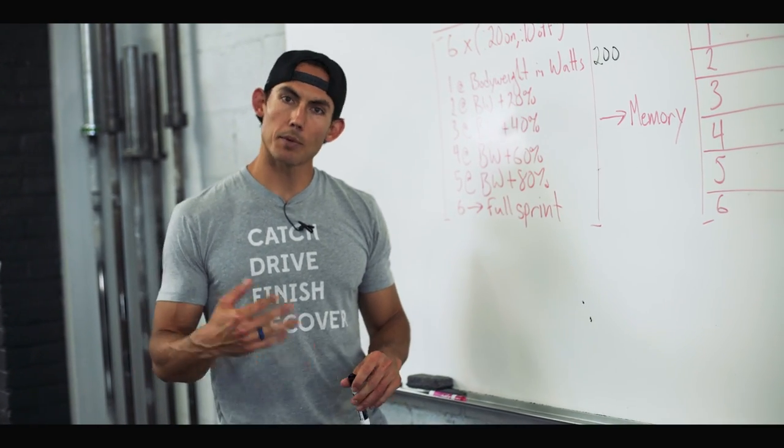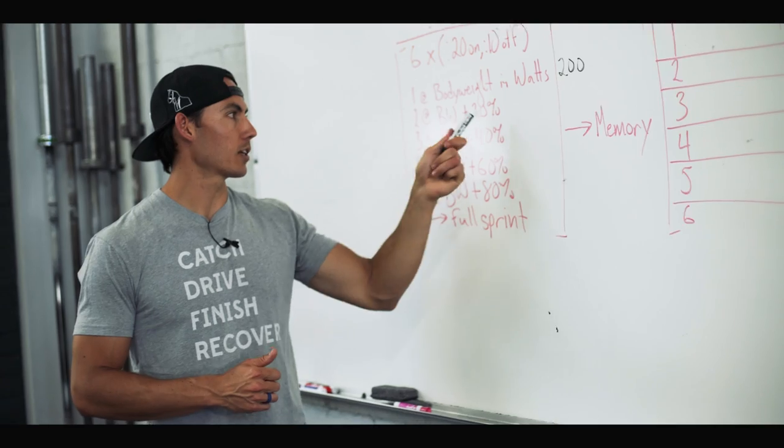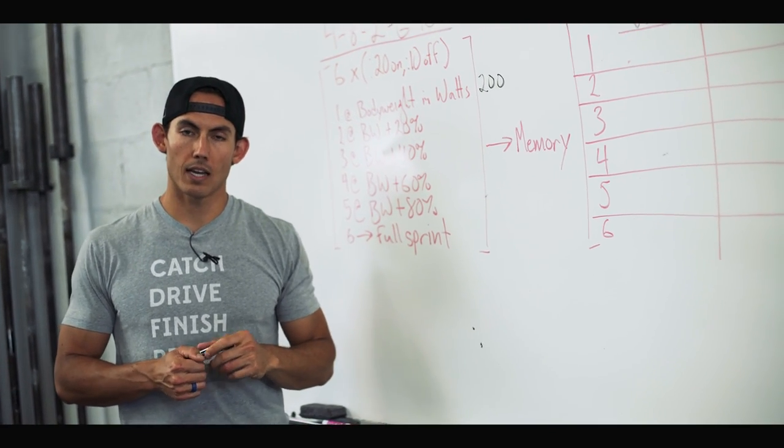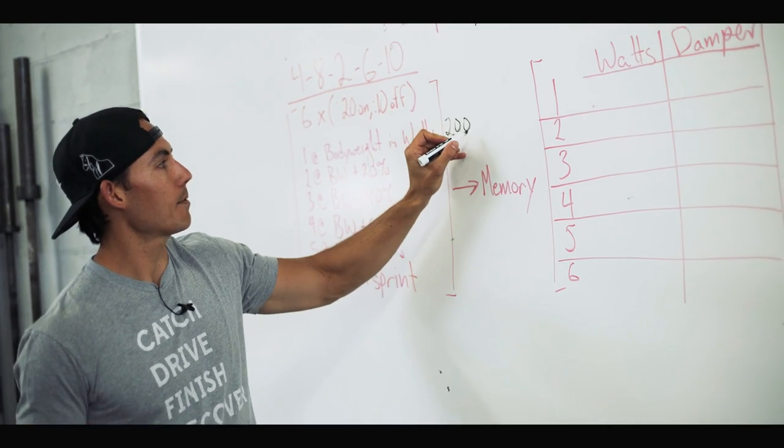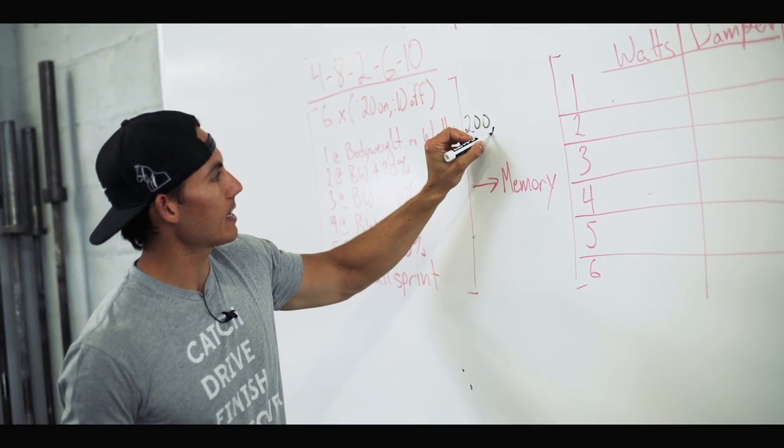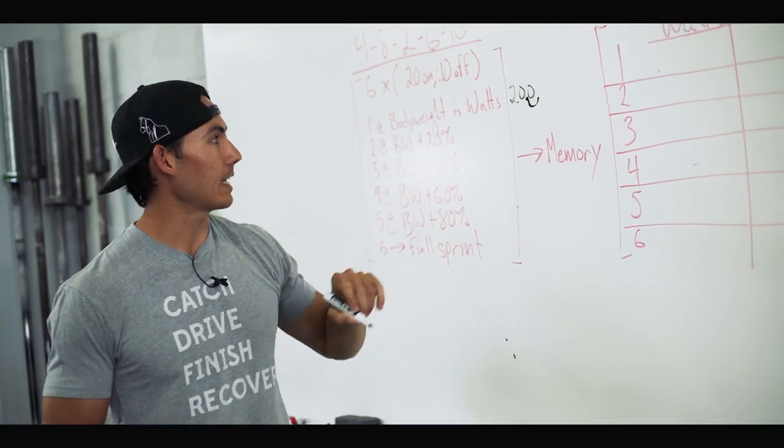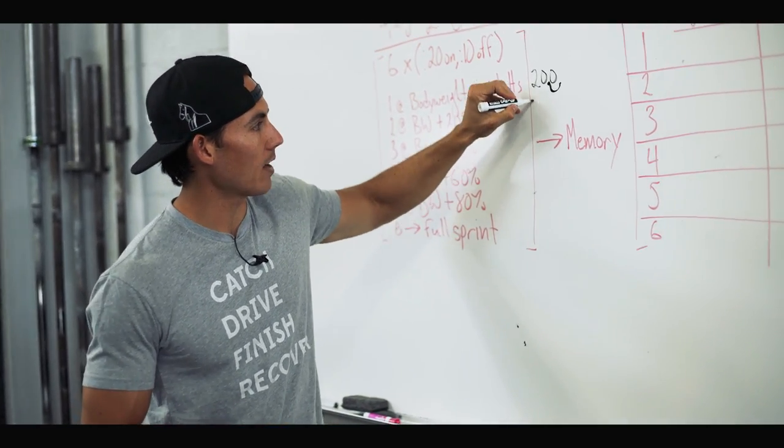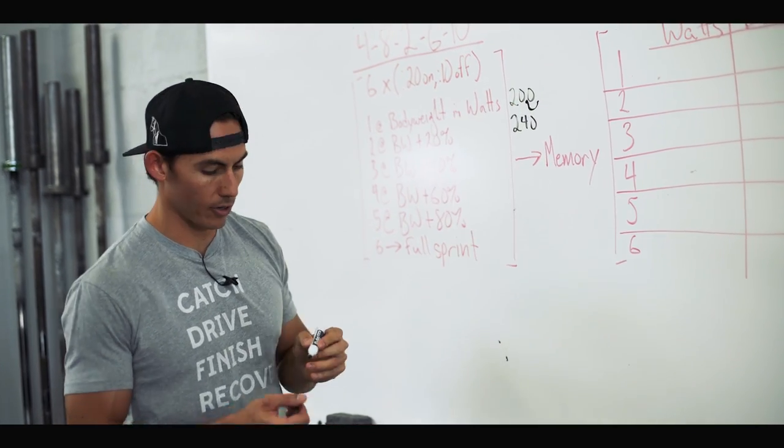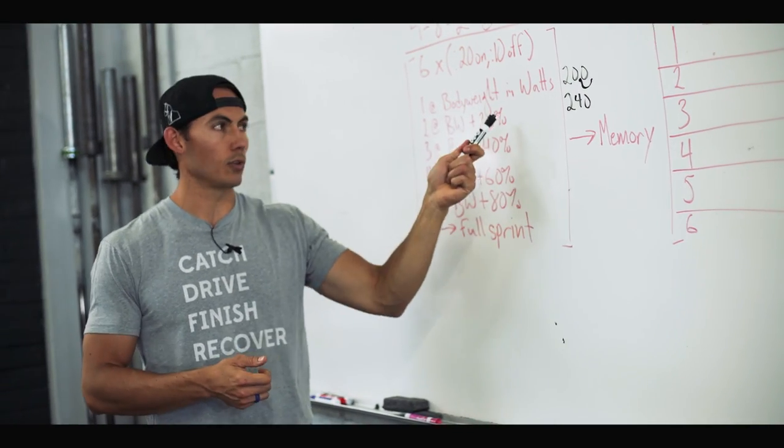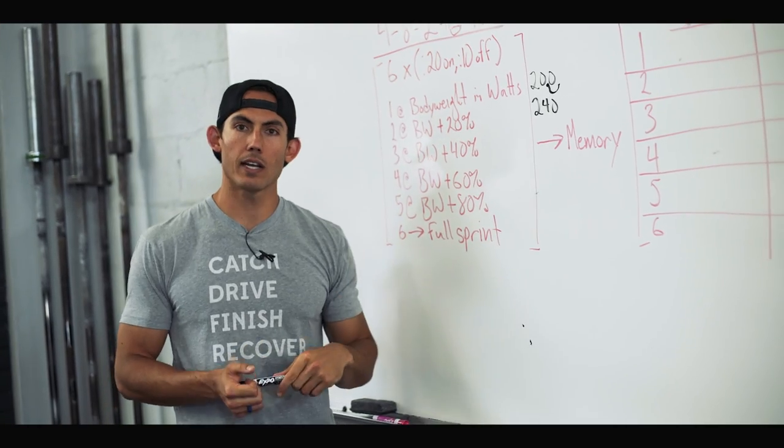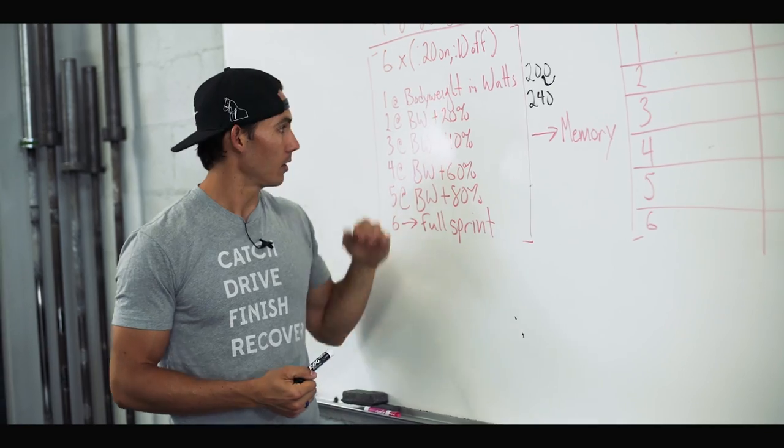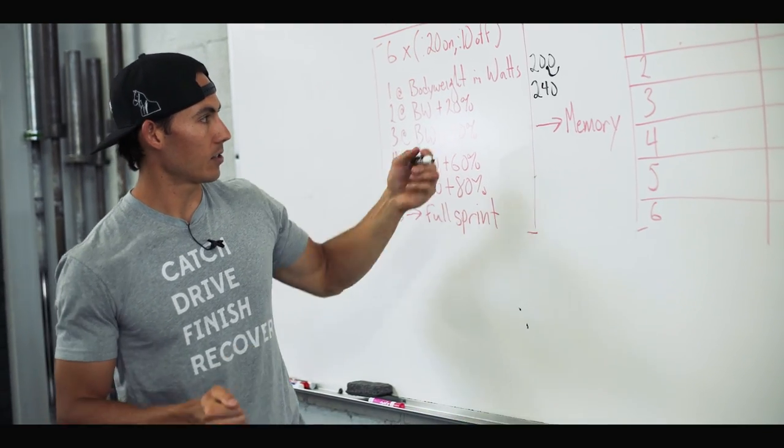Next round, 20 seconds on, you're going to add 20 percent. For those not good at math, 10 percent is taking the decimal place and moving it over one. So 10 percent of 200 is 20, therefore 20 percent is 40. I will row 240 watts for round two. Now I know that 20 percent is 40 watts, so I'm just going to add 40 watts each round through round five. So 240, 280, 320, 360.